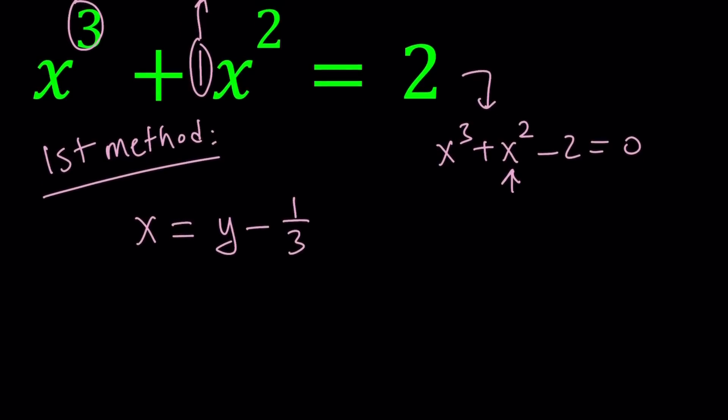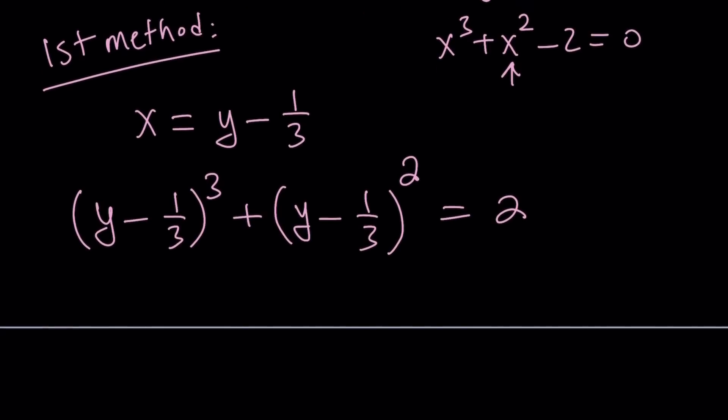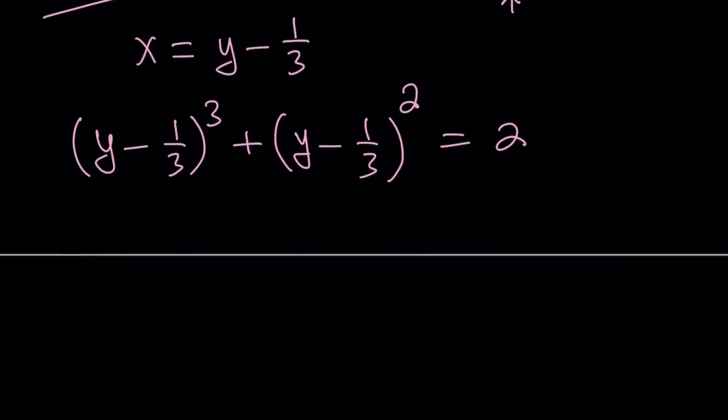If you plug this in you're going to get y minus one third cubed plus y minus one third squared equals two. If you expand it, the cubes, put it all together and clear all the fractions, multiply both sides by something, you're going to get this at the end. So to save you all that trouble, but you can definitely check my work, you're going to get the following cubic equation: 27y cubed minus 9y minus 52 equals zero.